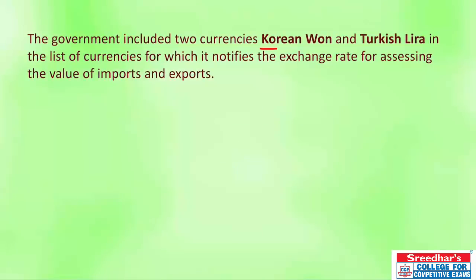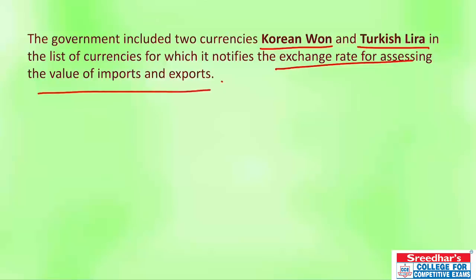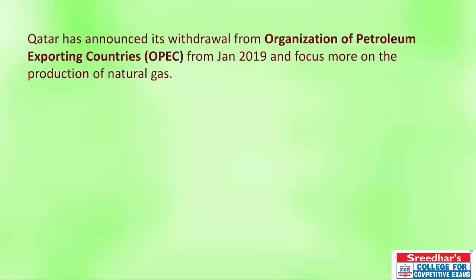The government has included two currencies — the Korean Won and Turkish Lira — in the list of currencies for the exchange rate for assessing the value of imports and exports. Earlier, Korean Won and Turkish Lira were not included in the list of currencies for exchange rate calculation; now they are also included.